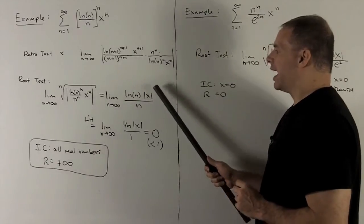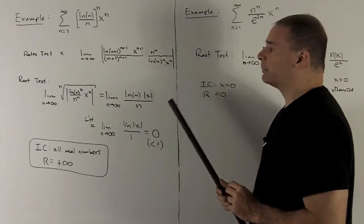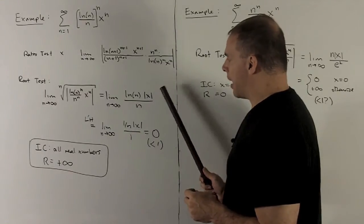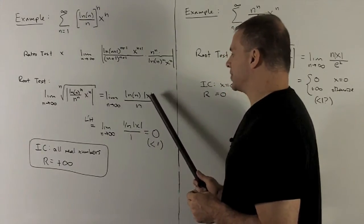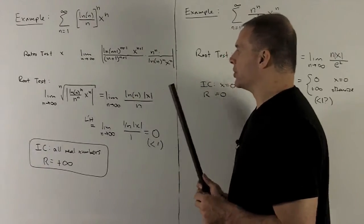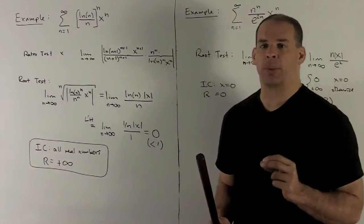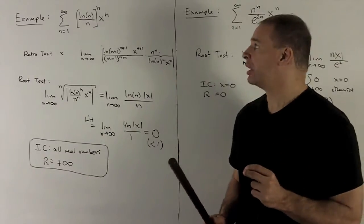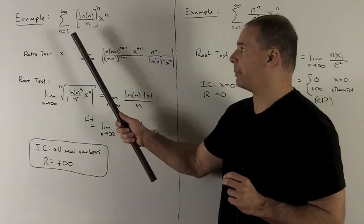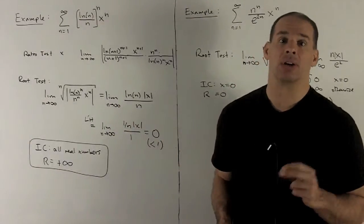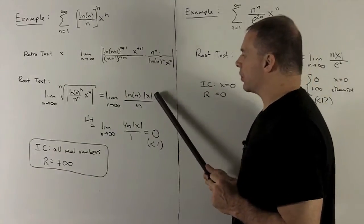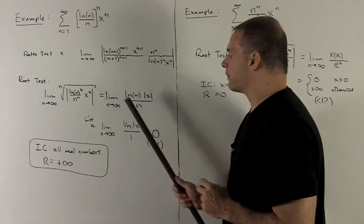Note that x is just going to be some fixed number. If x is equal to 0, that's going to zero out the top, and then this limit's just going to go to 0, and the root test tells us our series is going to converge. But it won't be very interesting, because if I put 0 in for x, we're just going to keep summing up 0s and our series is going to equal 0. If x is not 0, then it's just going to be some number, which we can pull out in front.